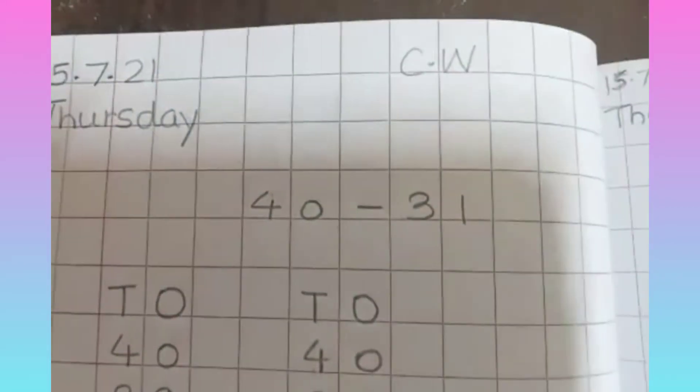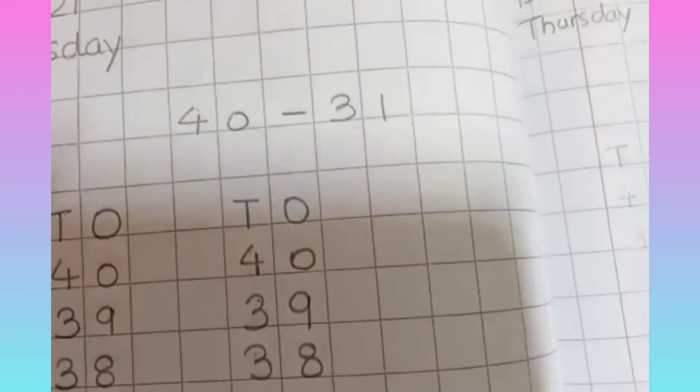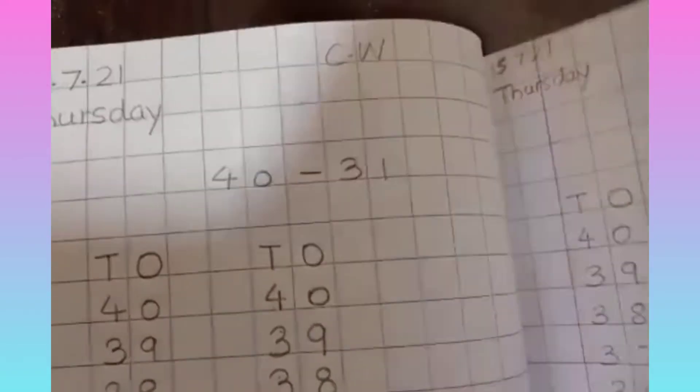So children, take out your maths notebook. Yesterday we had done till 40 to 31 backward counting. So today we will do from 50 till 41.